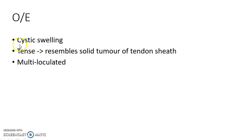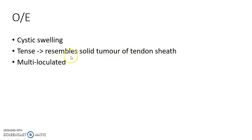On examination there will be cystic swelling on the dorsum of hand. Sometimes the cystic swelling will be so tense that it will resemble a solid tumor of the tendon sheath. The dorsal ganglion is usually multiloculated.